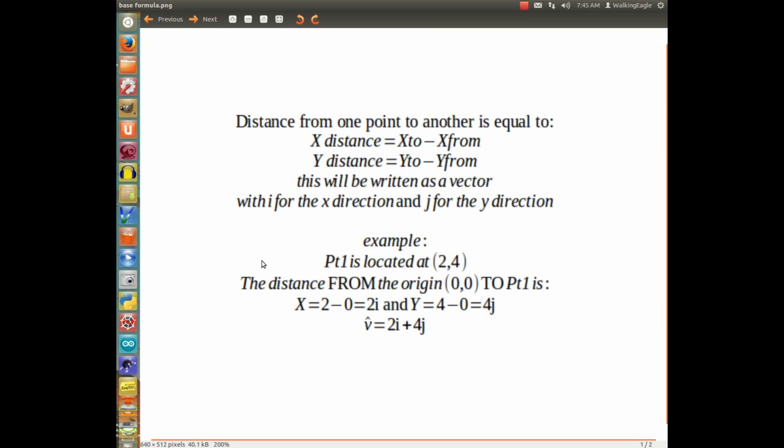the way you would do it is you calculate the x distance by taking the x of the point you're going to and subtract from that the x value of the point you're going from. Same thing for the y, you just keep them straight. Y distance is equal to the y of the point you're going to, and you subtract the point you're going from.